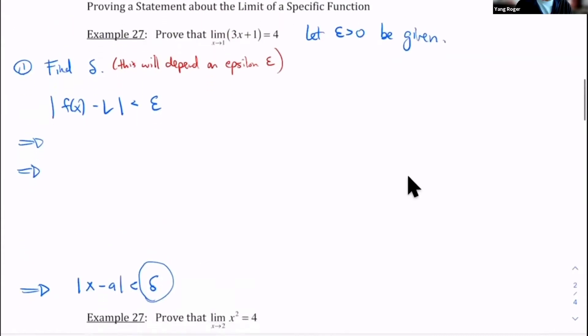So in case it's not totally obvious, our f of x is going to be equal to 3x plus 1, and our L is equal to 4. I hope there's no questions about that. Okay, so we're going to substitute in. We're going to substitute in so our f of x is going to be 3x plus 1 minus 4 is less than epsilon.